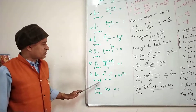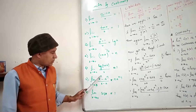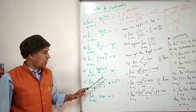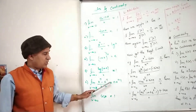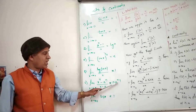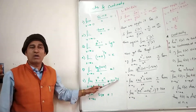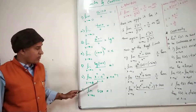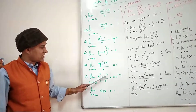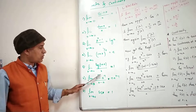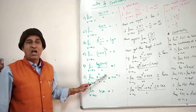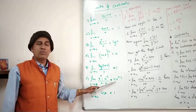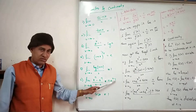Lim x tends to a, x to the power n minus a to the power n upon x minus a is equal to n into a raised to the power n minus 1. Note that where x tends to a, the base values must match — both must be the same, whether they are additive or otherwise. Only then can you substitute n into a raised to the power n minus 1.